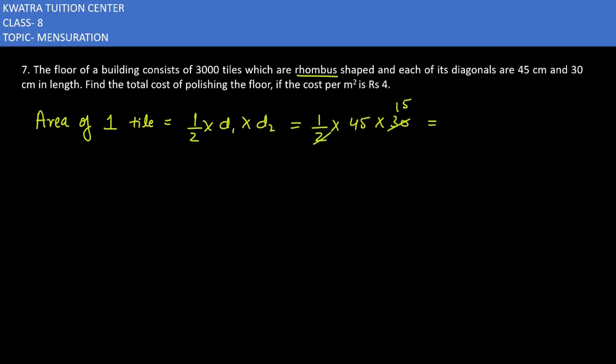Now next, what do we need to do? We need to find the area of 3000 tiles. We will multiply the area of one tile by 3000, so it will be 3000 into 675. It will give you 20,25,000 centimeter square. Now what you can see is that total cost which we have mentioned here, cost per meter square is 4.